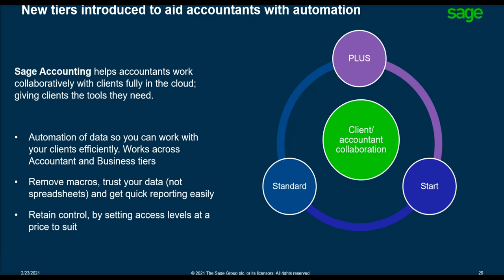There are three main tiers. Firstly, the Accounting Start package — an entry-level accounting software ideal for sole traders and micro businesses. Then the Accounting Standard package — a powerful cloud accounting solution with invoicing and cash flow management, allowing full collaboration between you and your clients. And finally, Accounting Plus — more enhanced, targeting small businesses that require foreign currencies and stock management, with full collaboration and unlimited users.